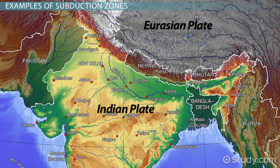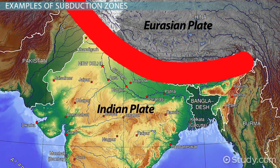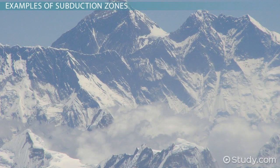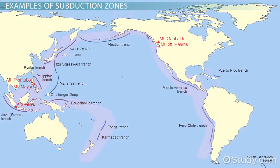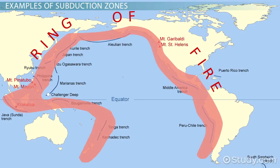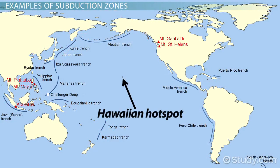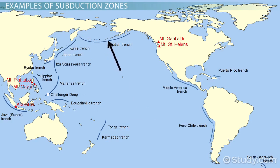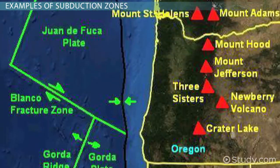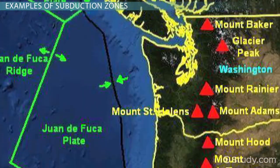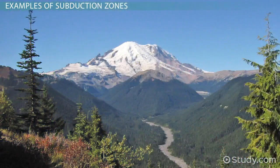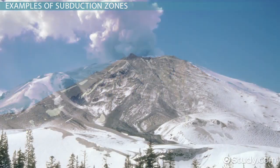The Himalayas formed when two continental plates collided — the Eurasian plate and the Indian plate. This collision continues to this day, and the Himalayas are still getting taller. Many of the islands in the Pacific in the so-called Ring of Fire were formed due to subduction zones, though some instead formed at hot spots in the middle of otherwise continuous plates. An example of islands formed from a genuine subduction zone is the Aleutian Islands, positioned near the border between two oceanic plates. Another example is the Cascade volcanoes in Oregon, Washington, and Western Canada, created from the subduction of the Pacific plate under the North American plate, which continues to this day.